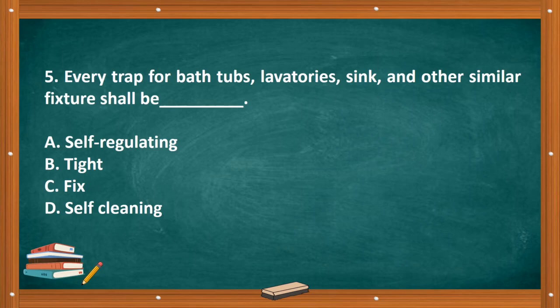Question number five: Every trap for bathtubs, lavatories, sink, and other similar fixtures shall be blank. A. self-regulating, B. tight, C. fixed, D. self-cleaning. The correct answer is letter D, self-cleaning.